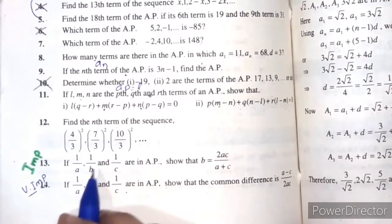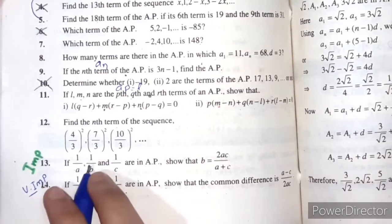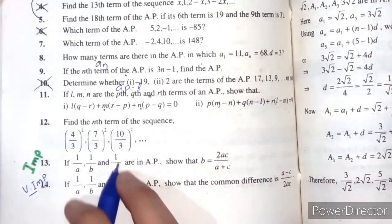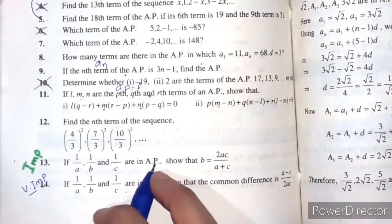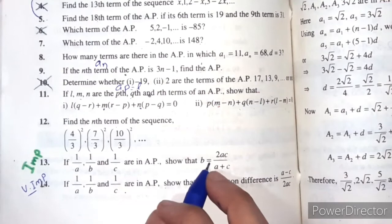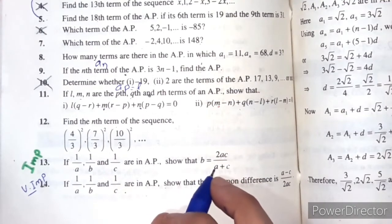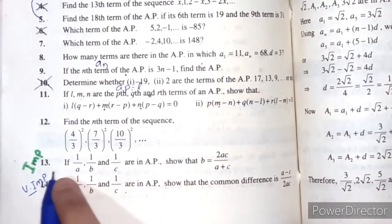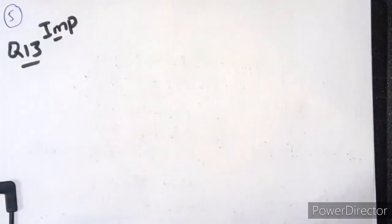Question number 13: If 1/a, 1/b, and 1/c are in arithmetic progression, show that b = 2ac/(a+c). This is important for short questions.